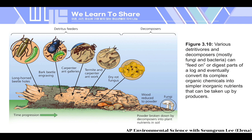Looking at this figure, we have various detritivores and decomposers — mostly fungi and bacteria — that feed on and digest parts of a log. The fungi here break down complex organic chemicals into simple nutrients that can be taken up by producers. Detritivore feeders shown include longhorn beetle holes, bark beetle engraving, carpenter ant galleries, termites, and dry rot fungus, while fungi are the decomposers.